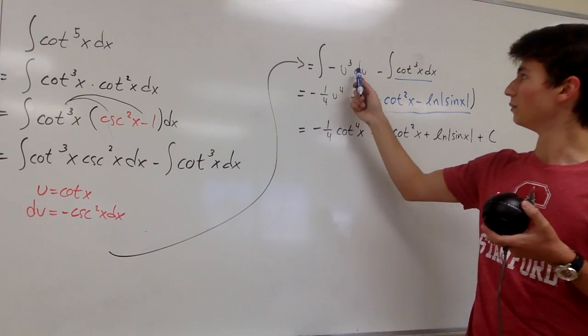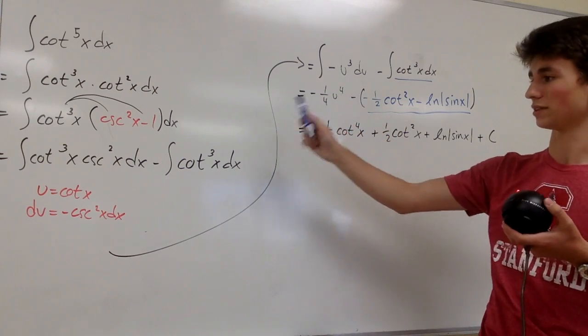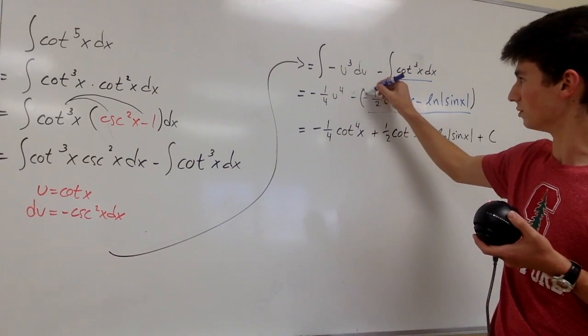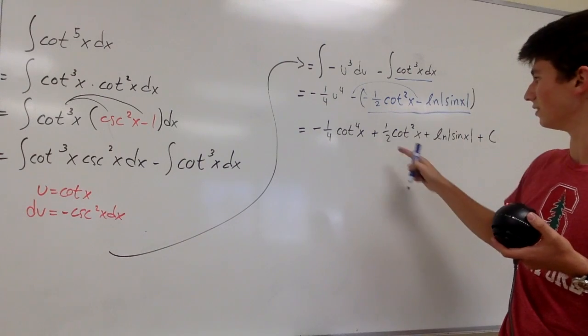And we can plug u equals cotangent of x back in, and we can distribute this negative right here, and they turn into positives.